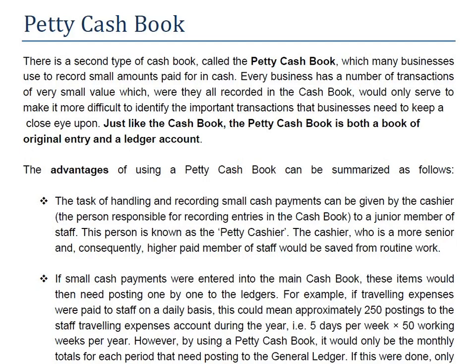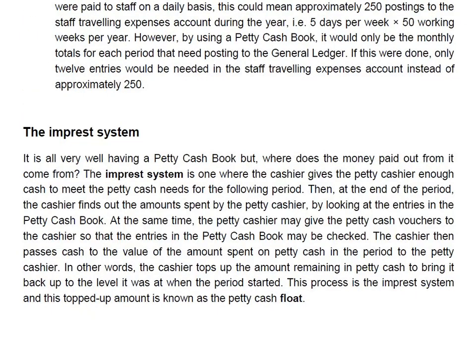The imprest system is when the main cashier gives a certain amount of cash to the petty cashier in order to run day-to-day operations and to record transactions in a separate book known as the petty cash book. In this way, the main cashier is saved from the burden of a large number of small transactions and can focus on more senior-level work. Also, if there are many small transactions, the cash book would get cluttered, so we keep these petty transactions in the petty cash book and only record the totals at the end of each month.